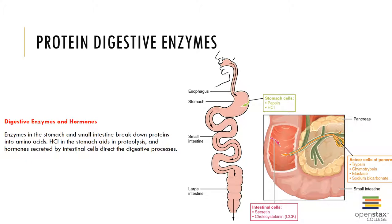However, protein digestion is not completed in the stomach because time is limited and pepsin only attacks specific types of peptide bonds. Pepsin has enough time to break down complex proteins into smaller peptides and polypeptide chains before that chyme enters the small intestine. When acid chyme arrives in the small intestine — more specifically the duodenum — CCK produced by the brush border cells stimulates the release of pancreatic proteases. These enzymes are secreted as inactive proenzymes that are then activated within the duodenum. The activated proteases include trypsin, chymotrypsin, carboxypeptidase, and elastase.